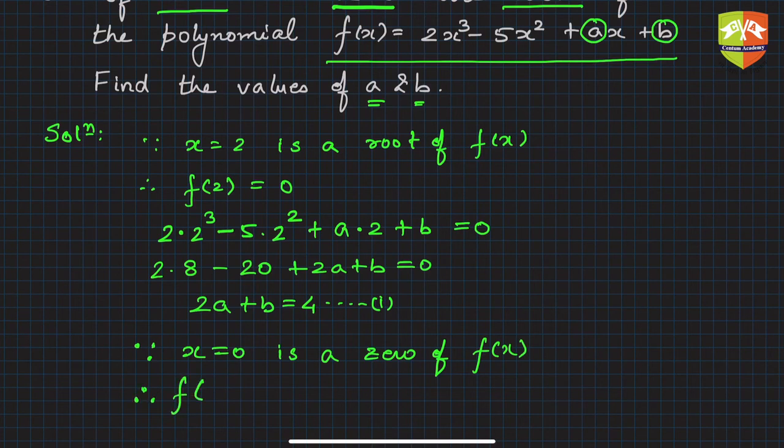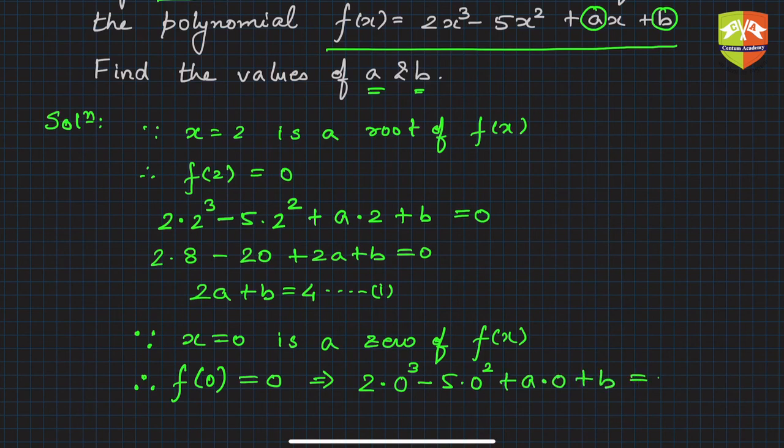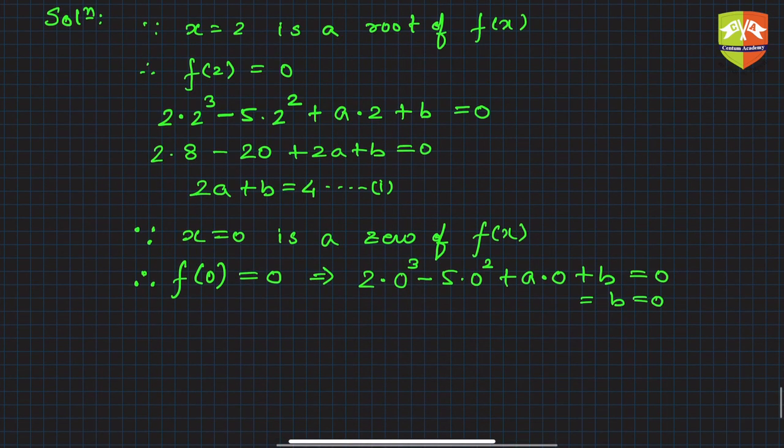The root of the polynomial is 0, so f of 0 should be 0. This implies wherever x is, deploy 0. So 0 cubed minus 5 times 0 squared plus a times 0 plus b equals 0. What did we eventually get? We will get b equals 0. This all will become reduced to 0, so this gives me b equals 0. Now if b is 0, from equation 1...